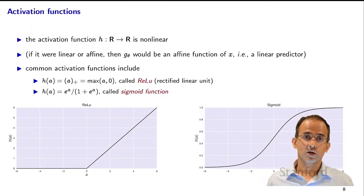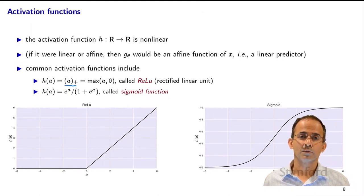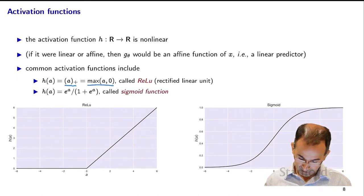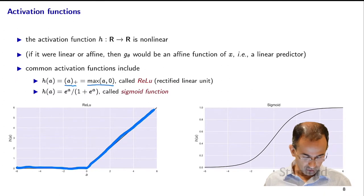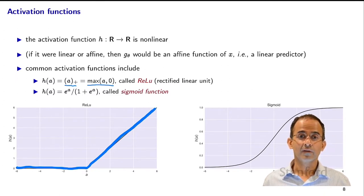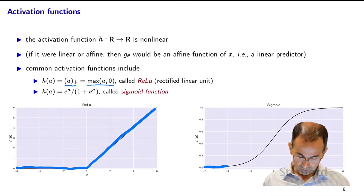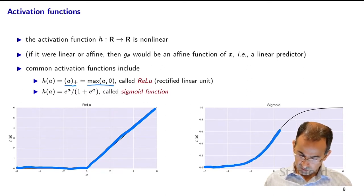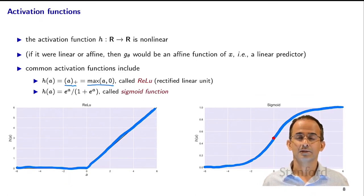The most common activation function is the ReLU, also written as (a)+ — the positive part of the number a, or max(a, 0). It's 0 when the input is negative and a when the input is positive. The other very common activation function is e^a / (1 + e^a) — a smooth function varying between 0 and 1; at 0 it's exactly one-half, as a tends to infinity it tends to 1, as a tends to minus infinity it tends to 0. It's a scaled hyperbolic tangent function.